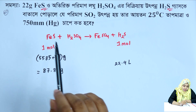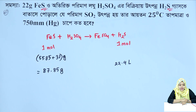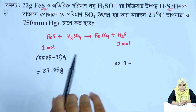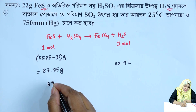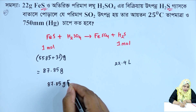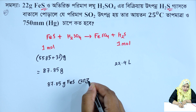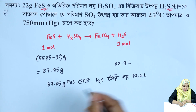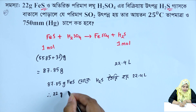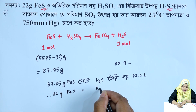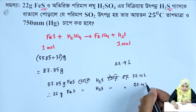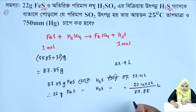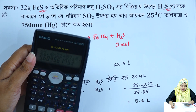The first step: 2.4 × 22.4 divided by 87.85 litres equals 5.6 litres of hydrogen sulfide gas at STP.